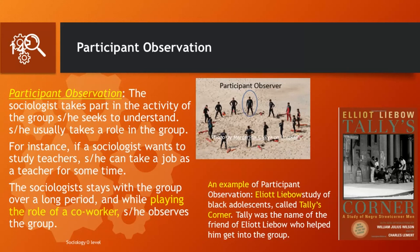An example from research would be that of Eliot Liebow, who conducted participant observation of black adolescents. His study was called Tally's Corner. Tally was the name of the friend of Eliot Liebow who helped him get into the group and conduct his study using participant observation.